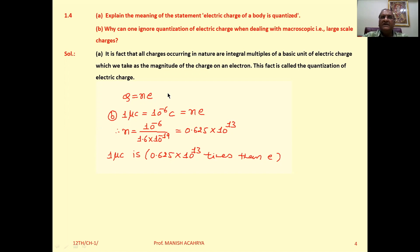In nature, charge is not available as 0.5 × e or 1.5 × e—not like that. This particular fact is called quantization of electric charge, or we can say electric charge of a body is quantized.